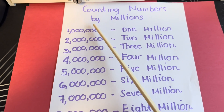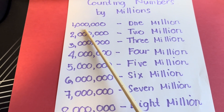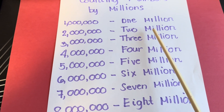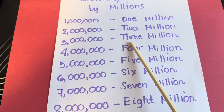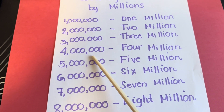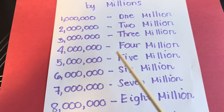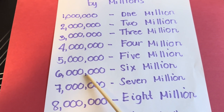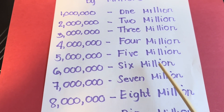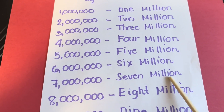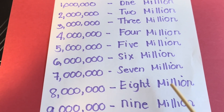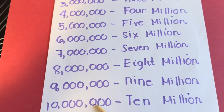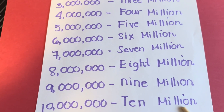And lastly, counting numbers by millions: 1 million, 2 million, 3 million, 4 million, 5 million, 6 million, 7 million, 8 million, 9 million, 10 million.